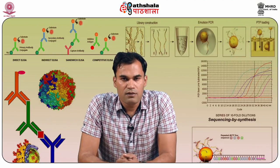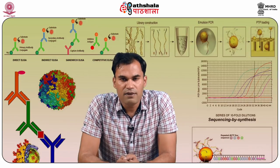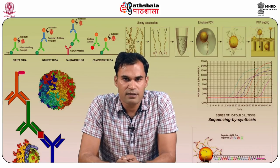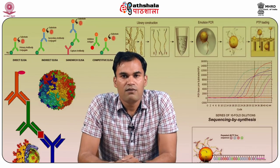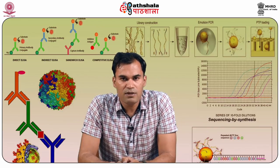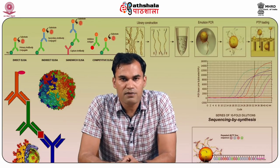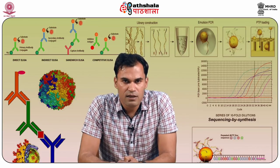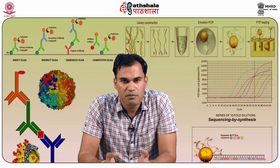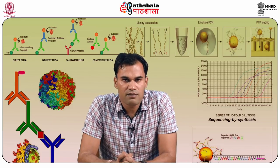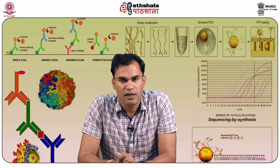To summarize our lecture: we have discussed what transgenic animals are — animals containing a foreign gene or transgene — and the process known as transgenesis. We discussed the need for transgenic animals, produced for the purpose of research and commercial interests. For research: academic, application and biomedical research. For commercial interest: conventional products like meat and milk, and non-conventional products like interferon and antitrypsin.